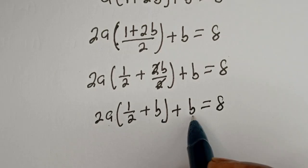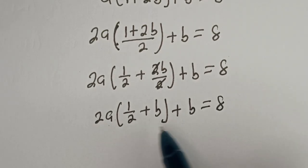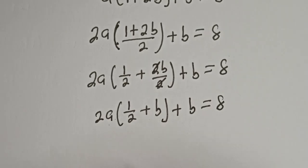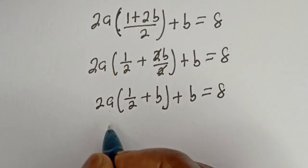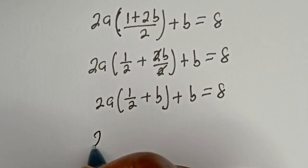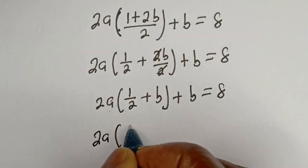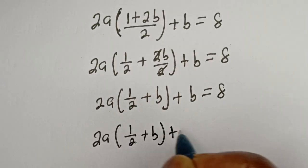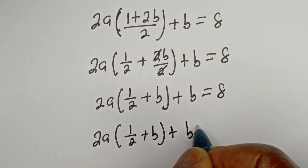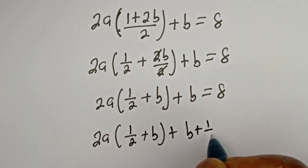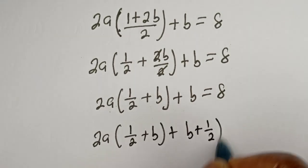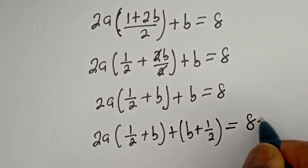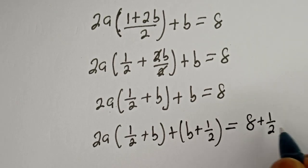In order to make this factorable, we add 1 divided by 2 to both sides of this equation: 2a bracket 1 divided by 2 plus b, plus b plus 1 divided by 2, is equal to 8 plus 1 divided by 2.